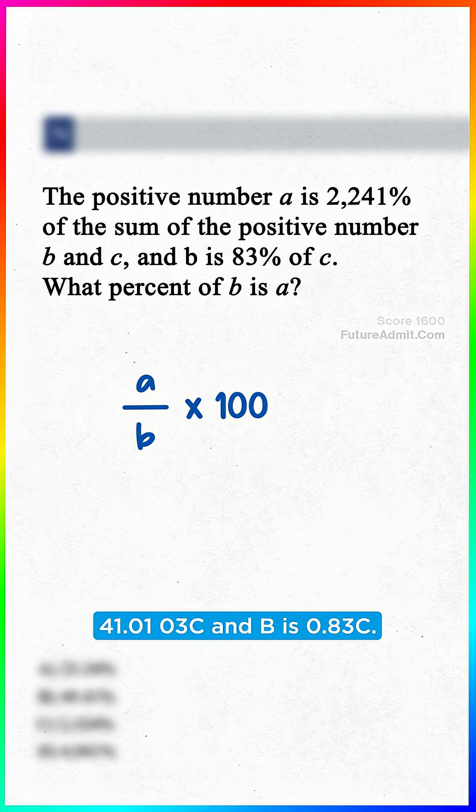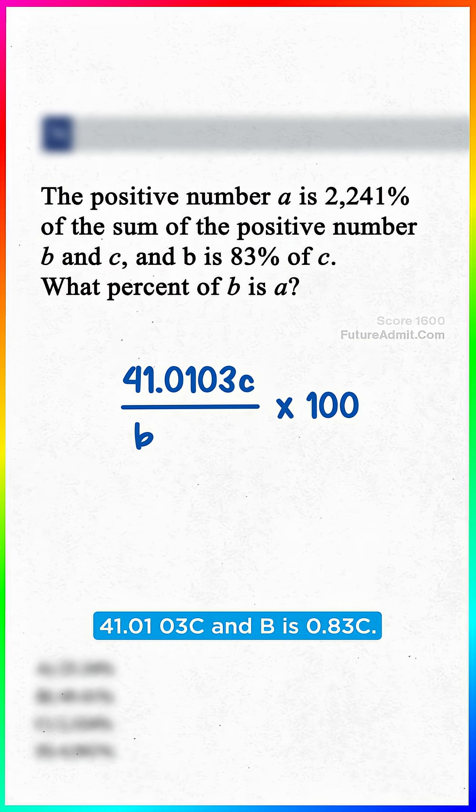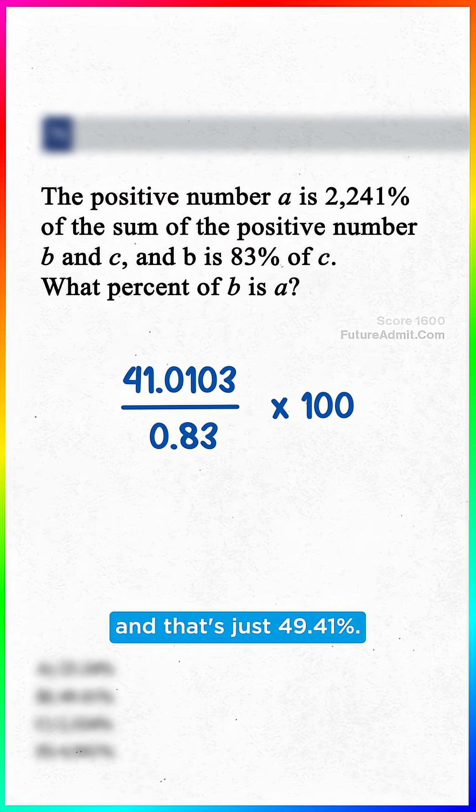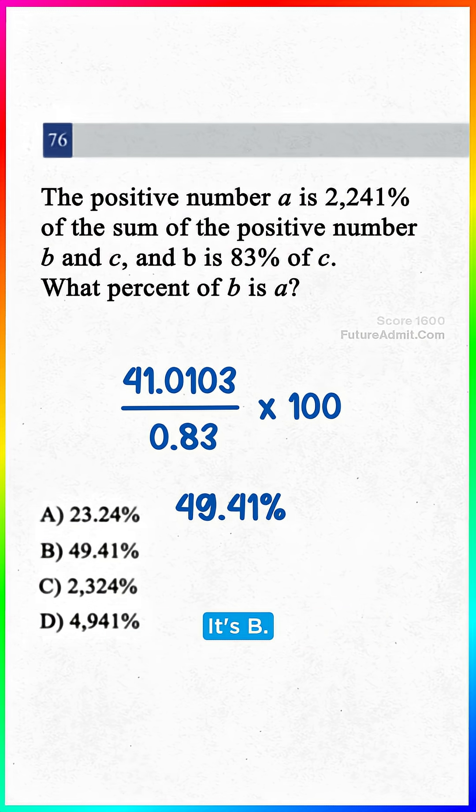We know A is 41.0103C and B is 0.83C. The C's cancel, and that's just 49.41%. It's B.